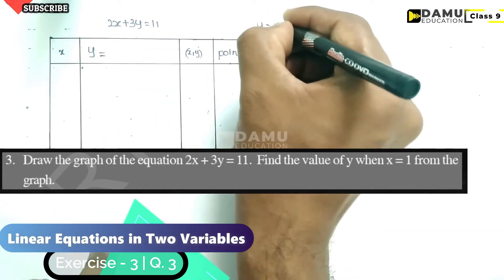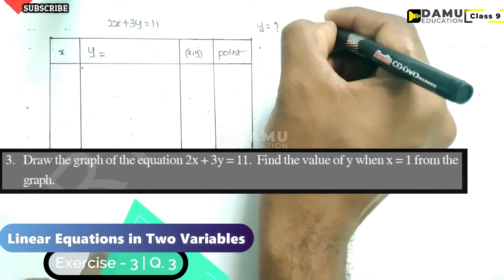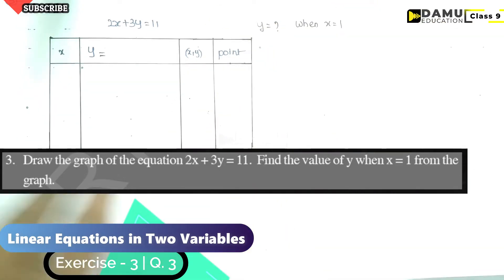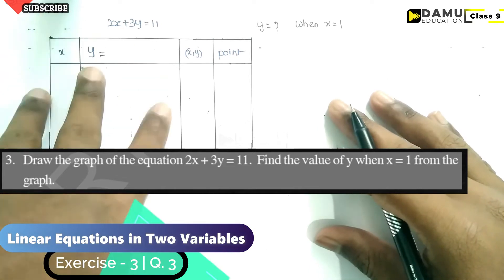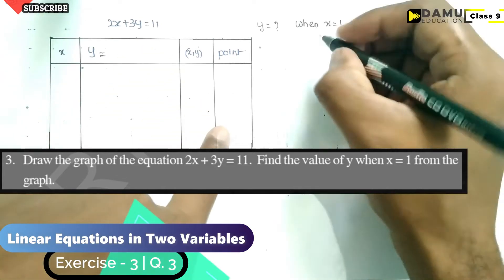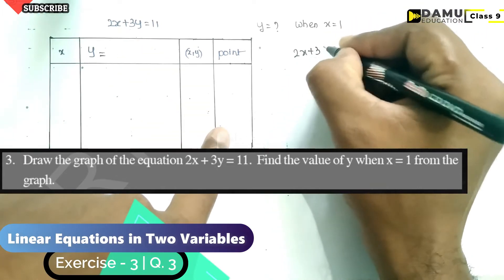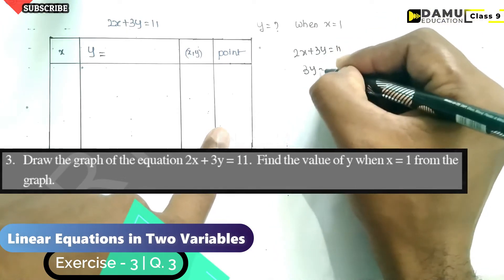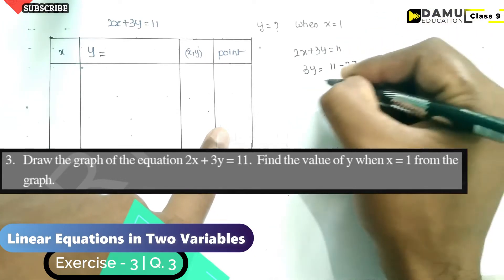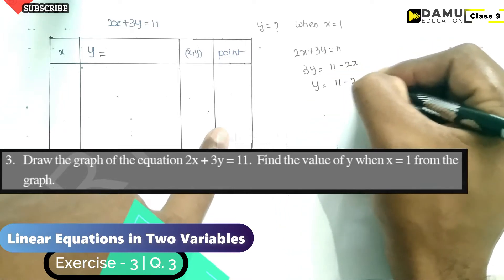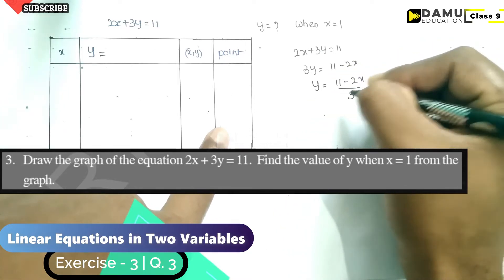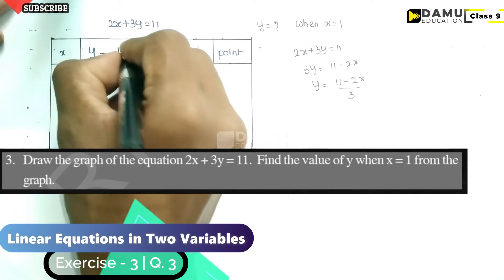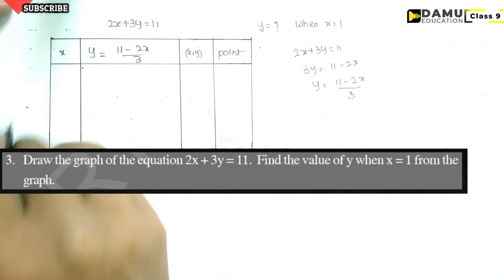What is the value of y when x equals 1? We need to find it from the graph. Before going to that, we need to find the y equation. They have given that 2x plus 3y equals 11. Then, 3y equals 11 minus 2x. So, y equals (11 minus 2x) divided by 3.